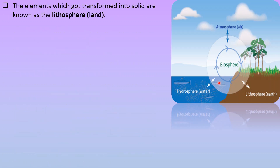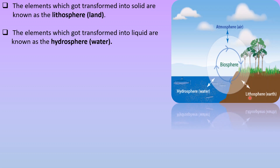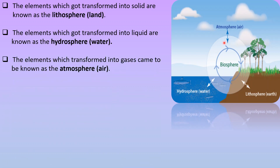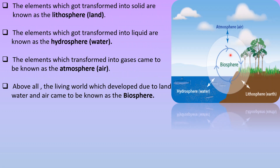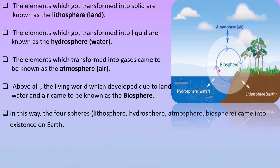The elements which got transformed into solid are known as the lithosphere, meaning land. The elements which got transformed into liquid are known as the hydrosphere, meaning water. The elements which transformed into gases came to be known as the atmosphere, or air. The living world which developed due to land, water, and air came to be known as the biosphere. Thus, these four spheres — lithosphere, hydrosphere, atmosphere, and biosphere — came into existence on Earth.